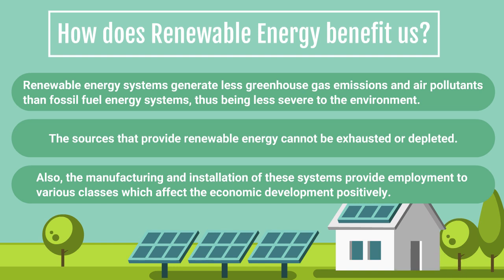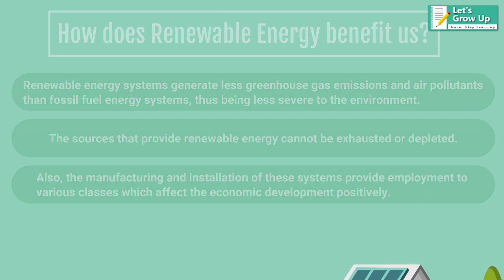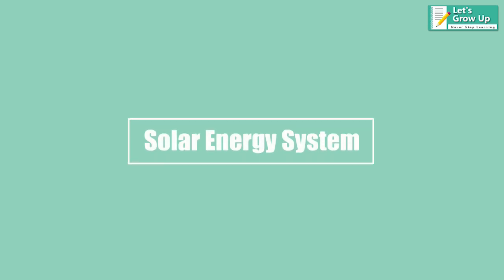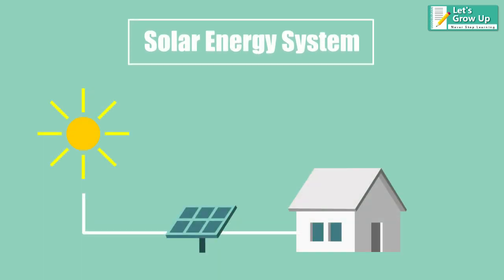Today we will get a brief idea about the concepts used by the different energy systems. Solar energy system: these systems use the radiant light and heat energy from the sun to heat houses and offices, warm water, and transform sunlight into electricity through photovoltaic or PV cells.